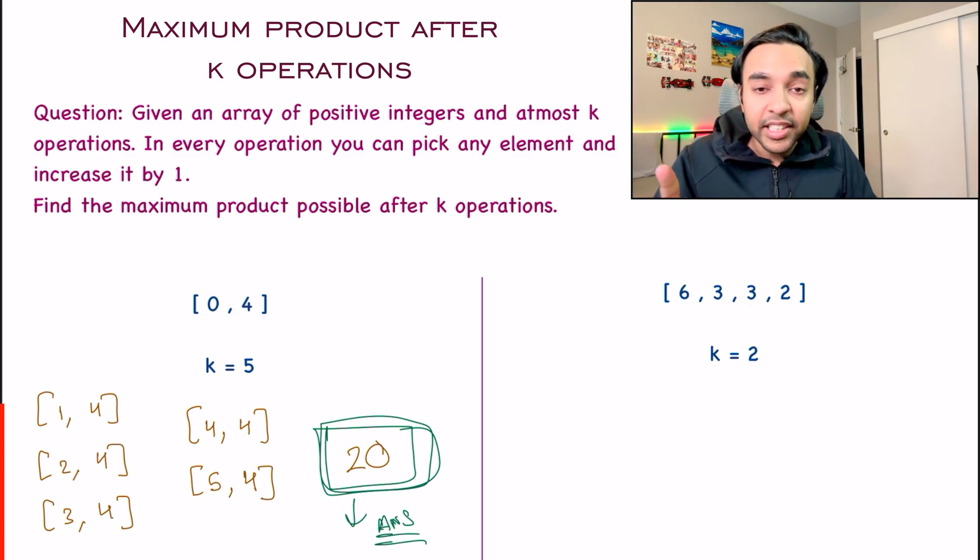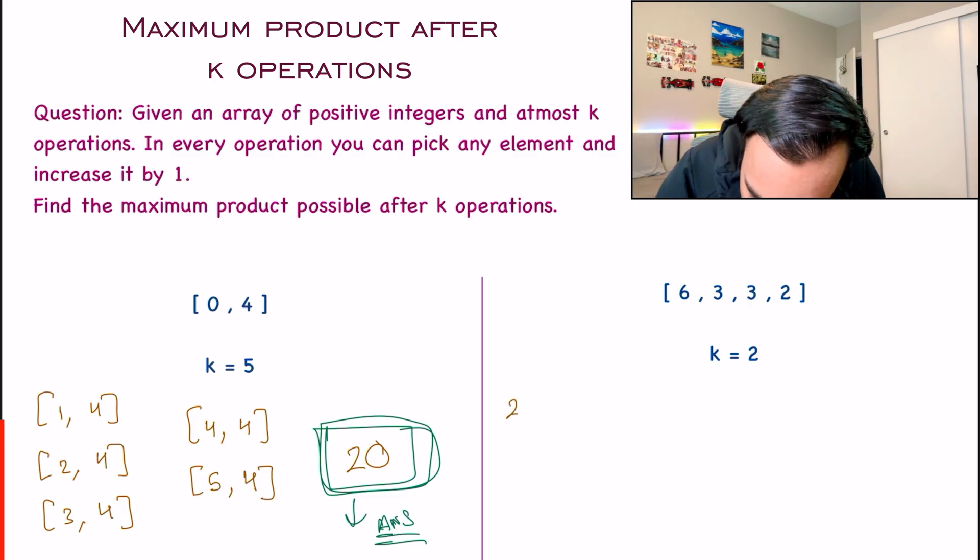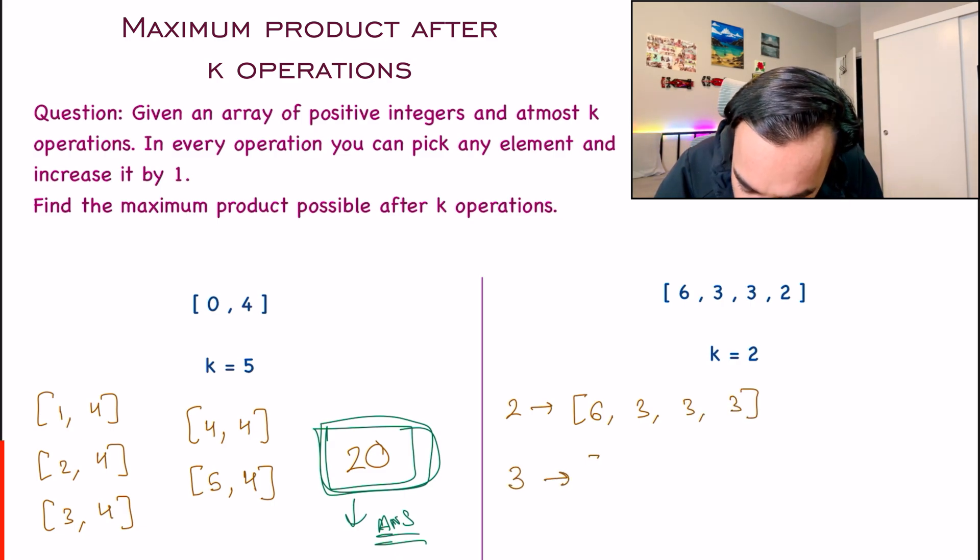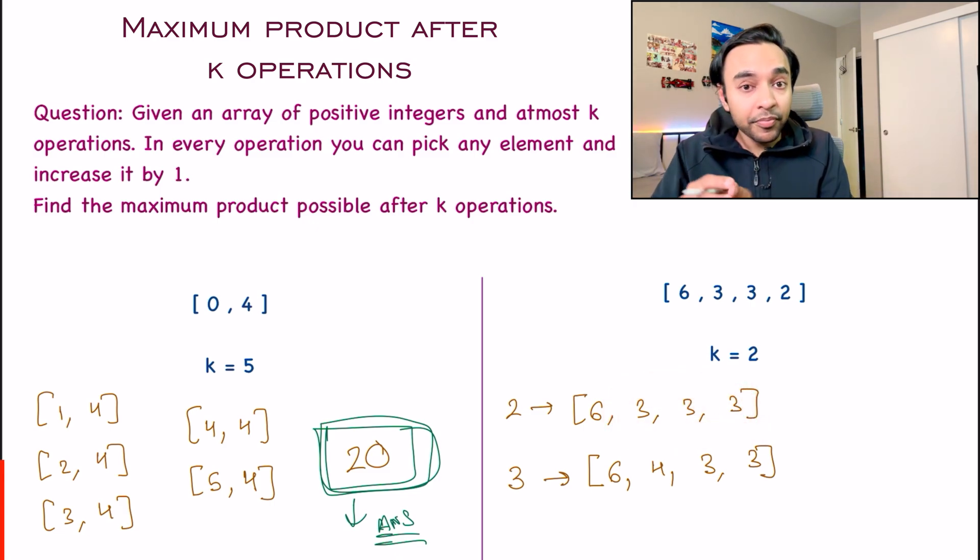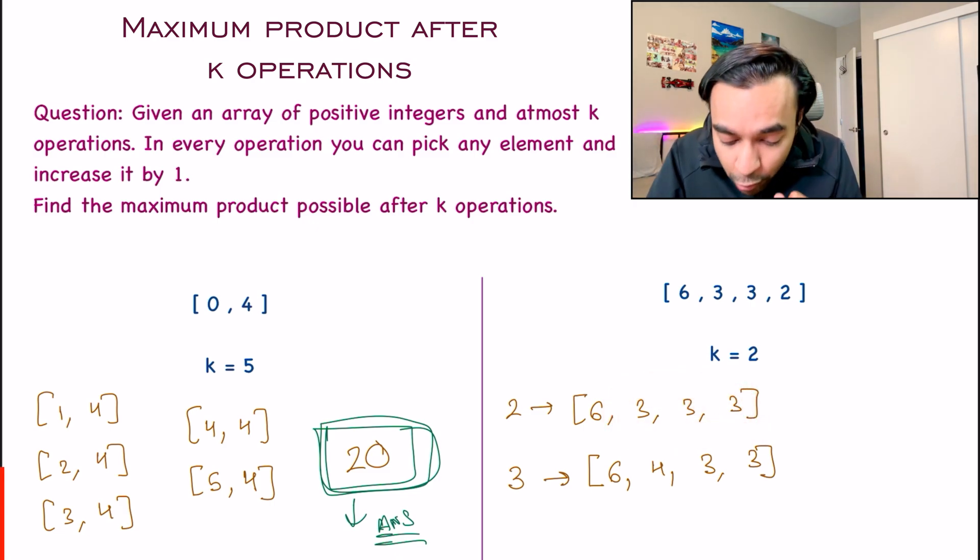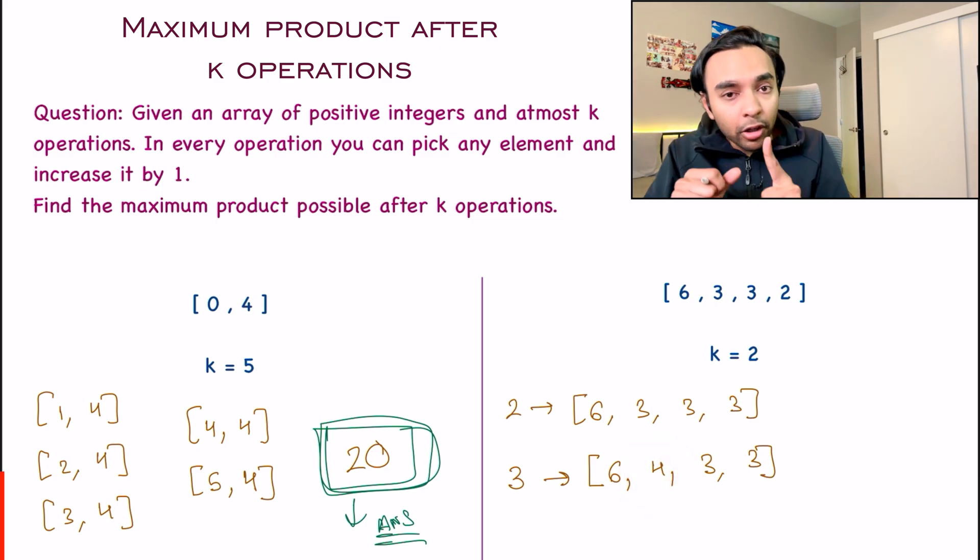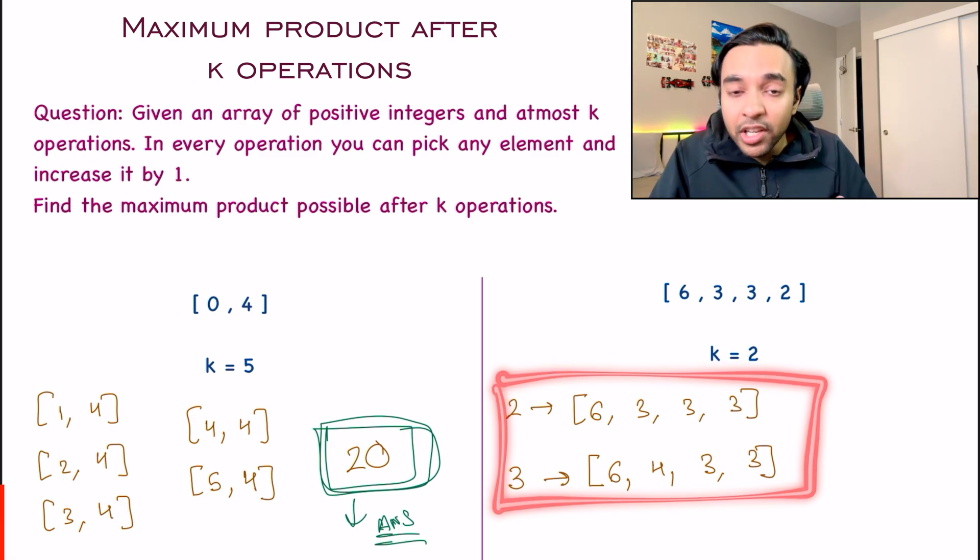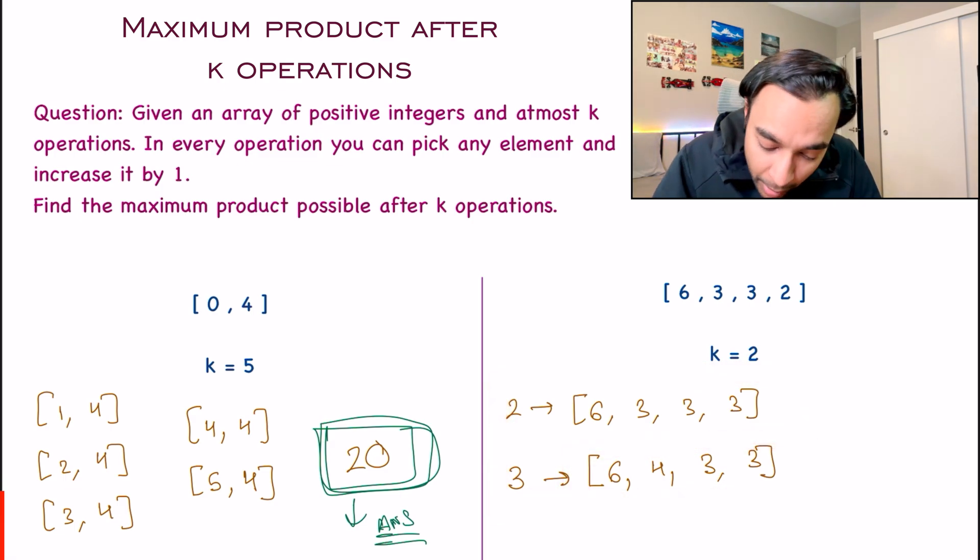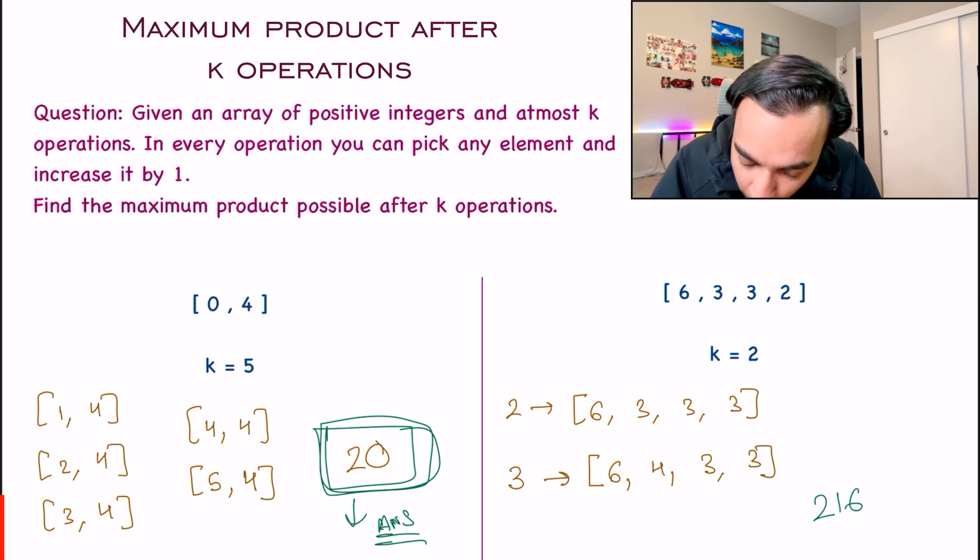That means for every operation, I need to pick any one of these numbers and increment it by 1. So you can see that I have so many different variations possible. I can pick up 6 and 3 or I can pick up 3 and 3, or I can pick up 2 and 6 and it can be anything. For this particular test case, you will find the maximum product when you apply two operations. First of all, on the integer 2, then your array becomes [6,3,3,3]. And then once again, you apply the operation on the number 3. Then you get [6,4,3,3]. Notice that even if you have multiple digits of the same element, then whenever you are applying an operation, you have to increment only one of those digits, not all of them.